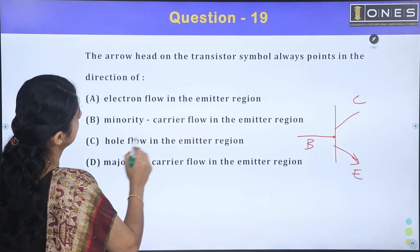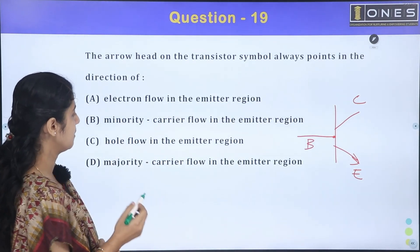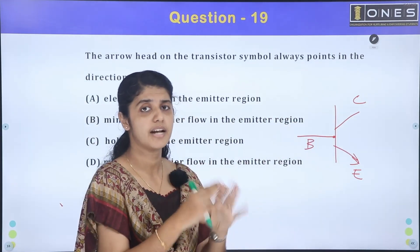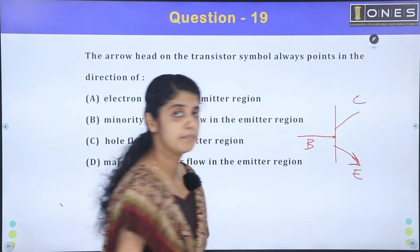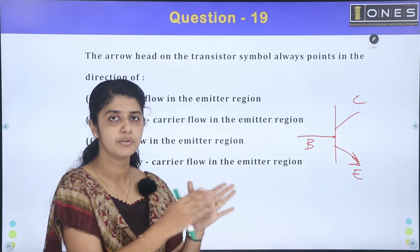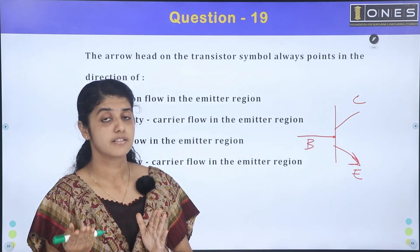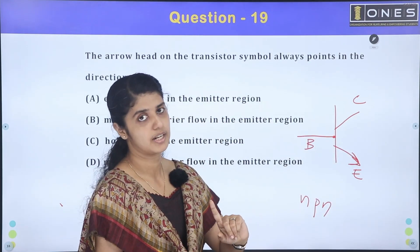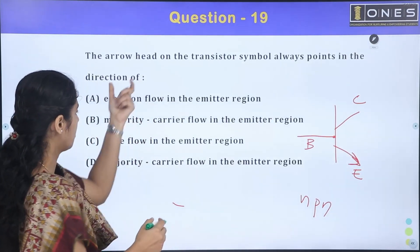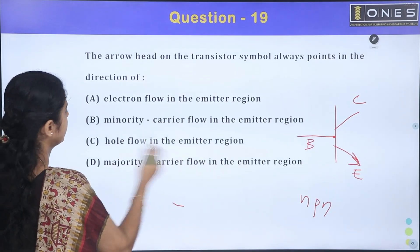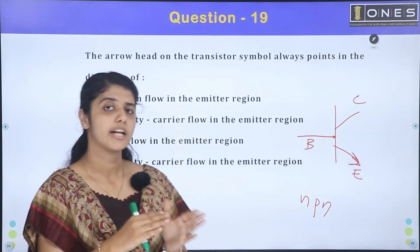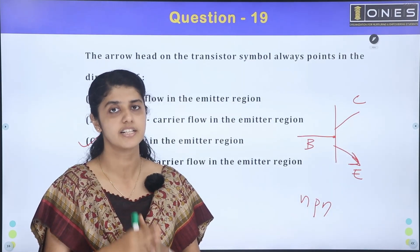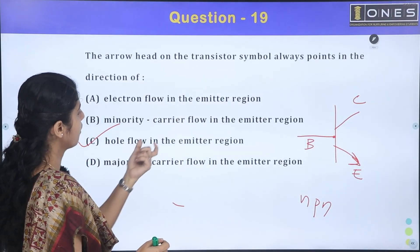The options are: electron flow in the emitter region, minority carrier flow in the emitter region, hole flow in the emitter region, or majority carrier flow in the emitter region. The arrowhead indicates current direction in the emitter. For NPN and PNP transistors the direction is opposite. The arrowhead points in the direction of conventional current, which is hole flow. The answer is hole flow in the emitter region.